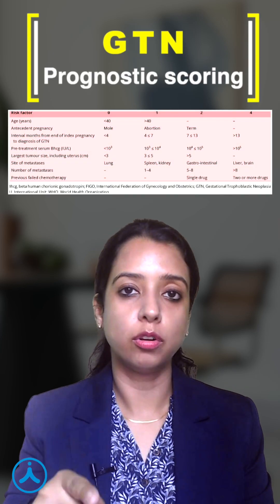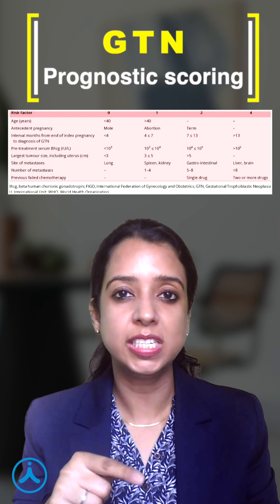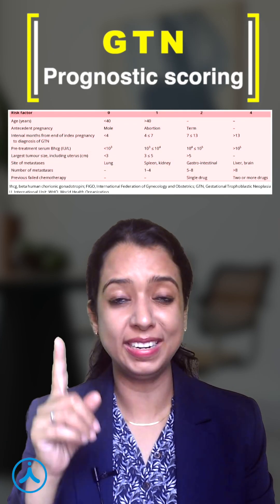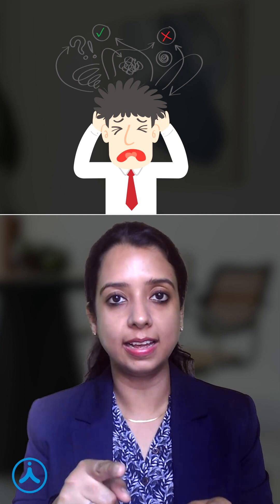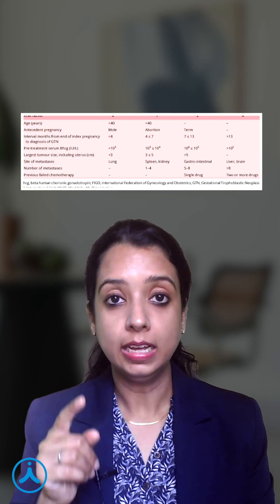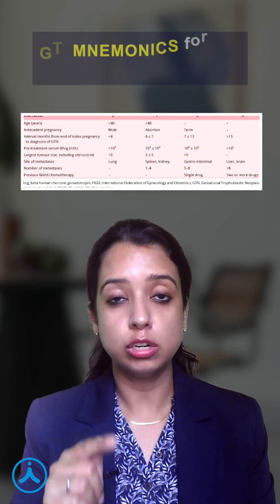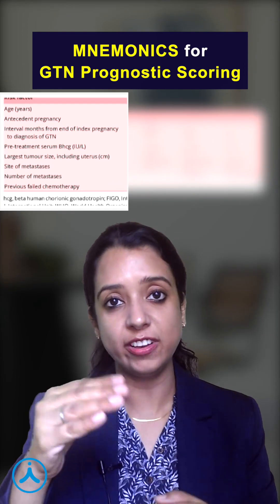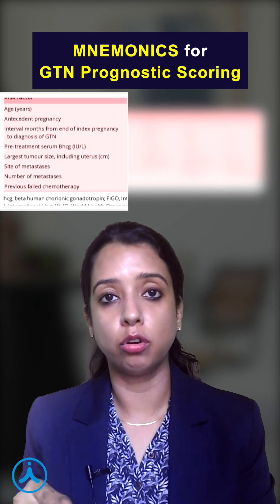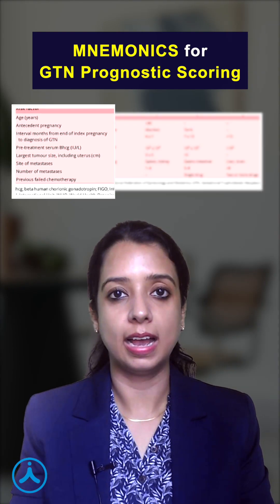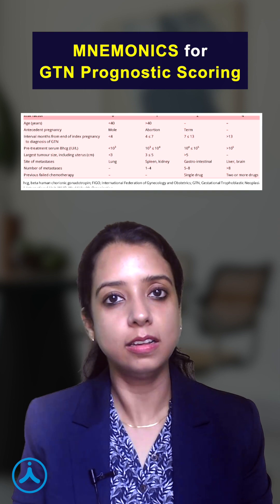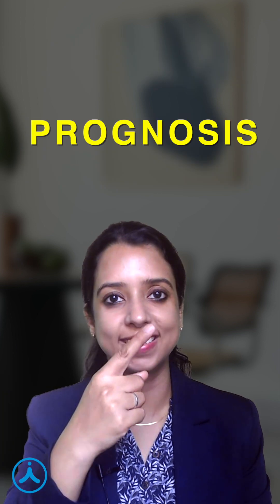Whenever you see the table for prognostic scoring of GTN, don't you feel overwhelmed? I also used to feel the same, unless I came up with a mnemonic. The mnemonic to remember all the variables used to calculate prognosis of GTN is simple — it stands as 'PROGNOSIS'.